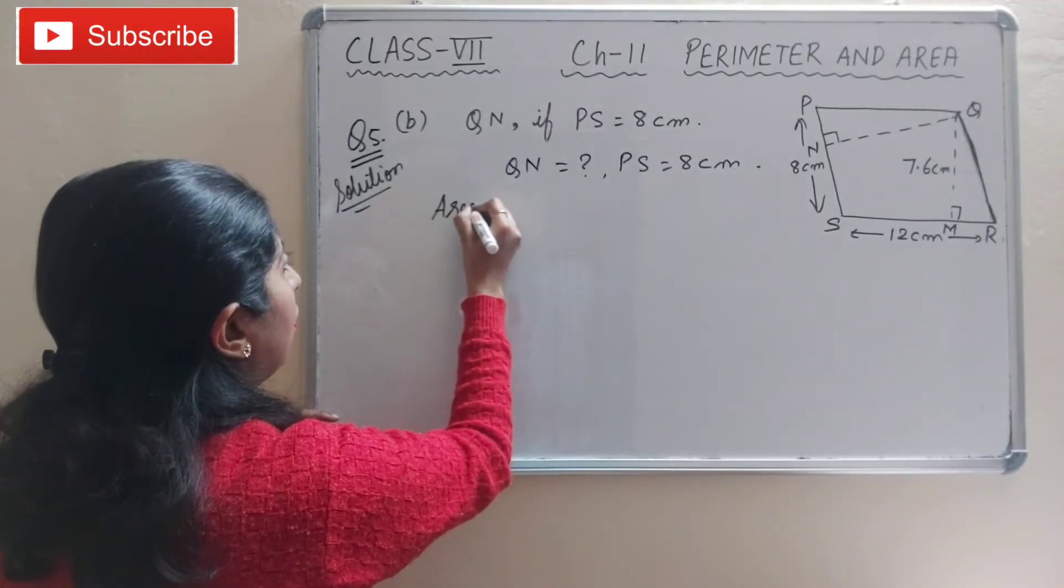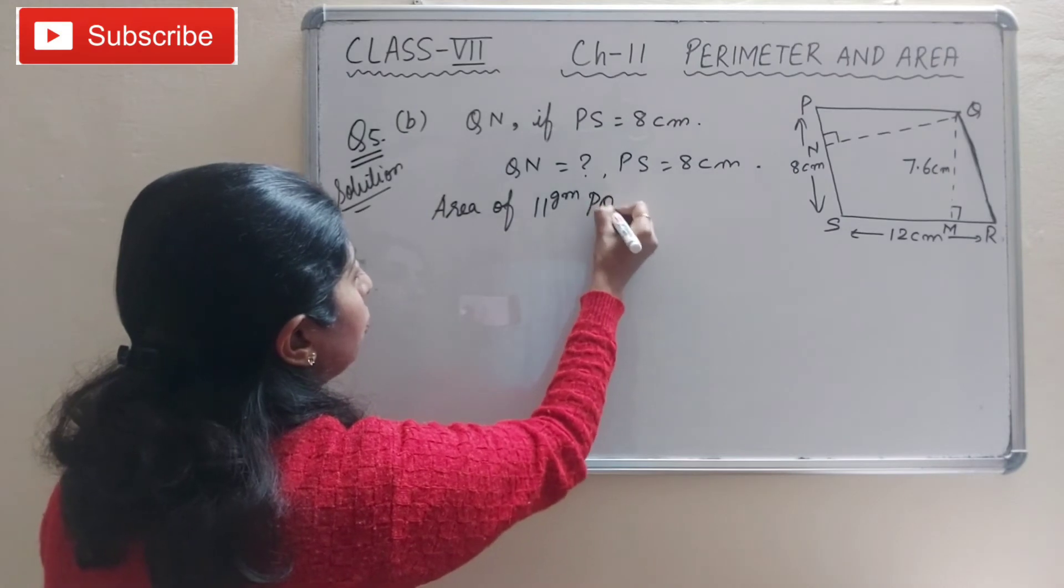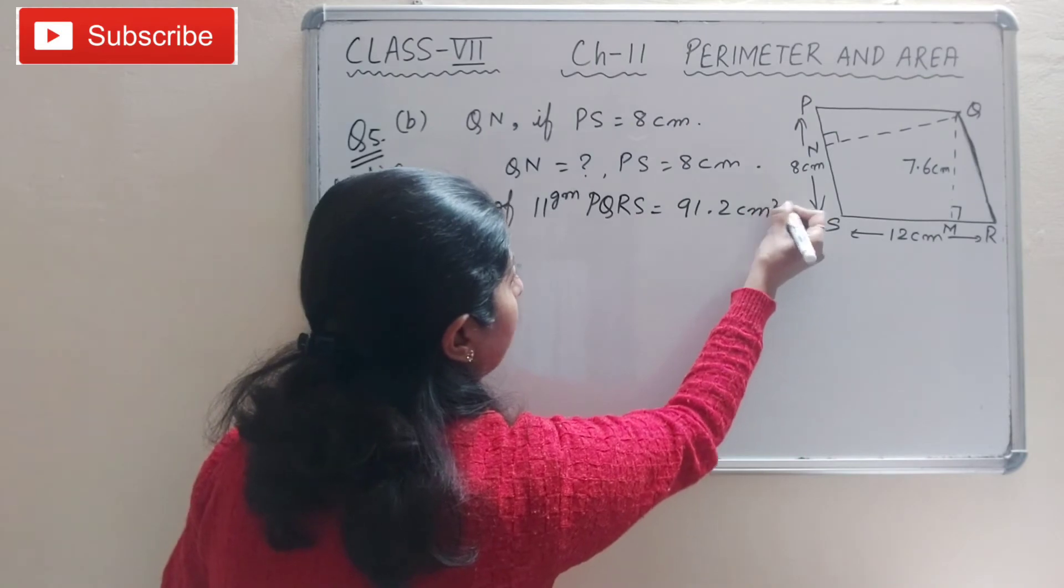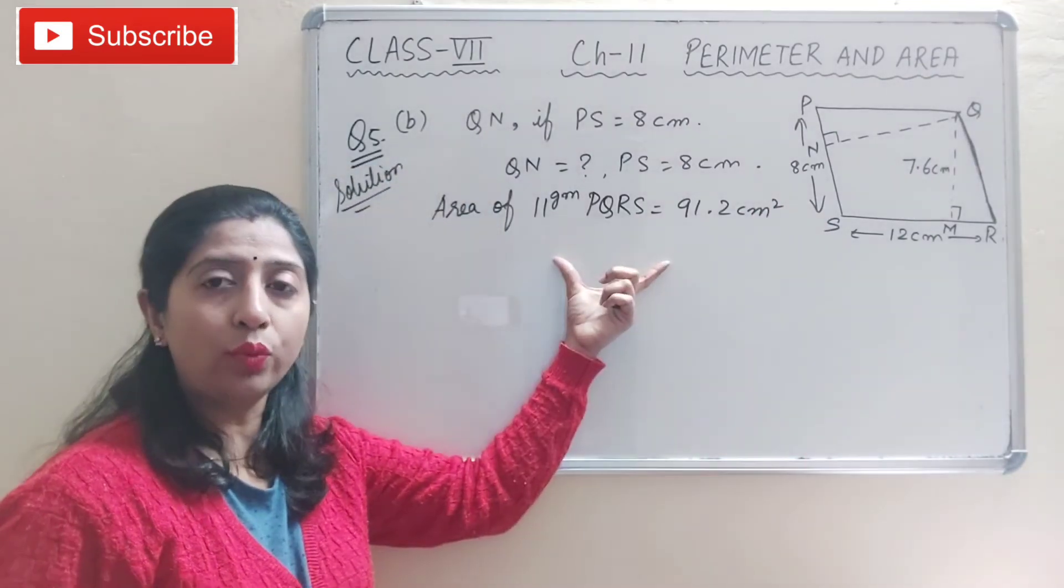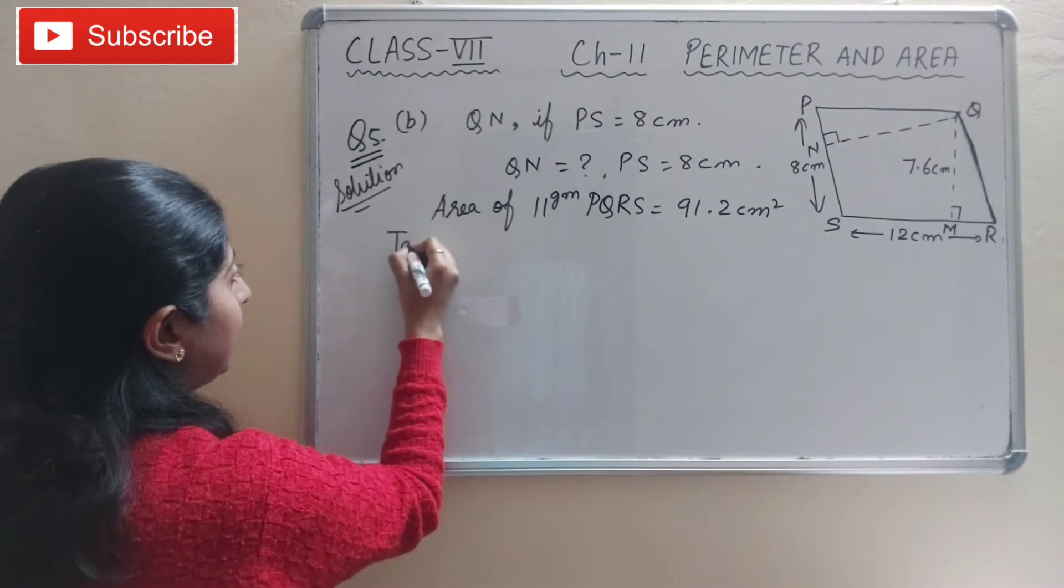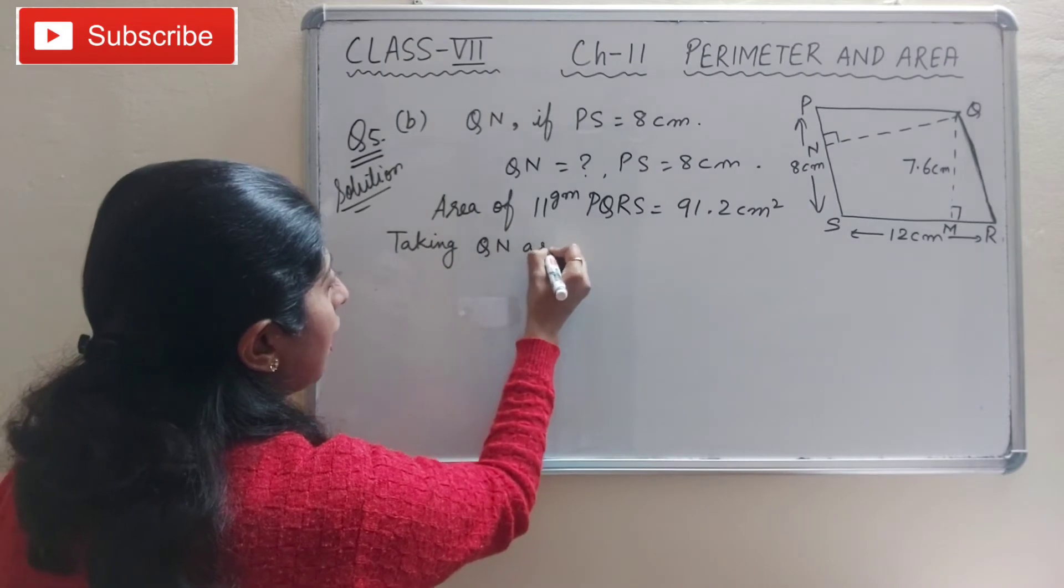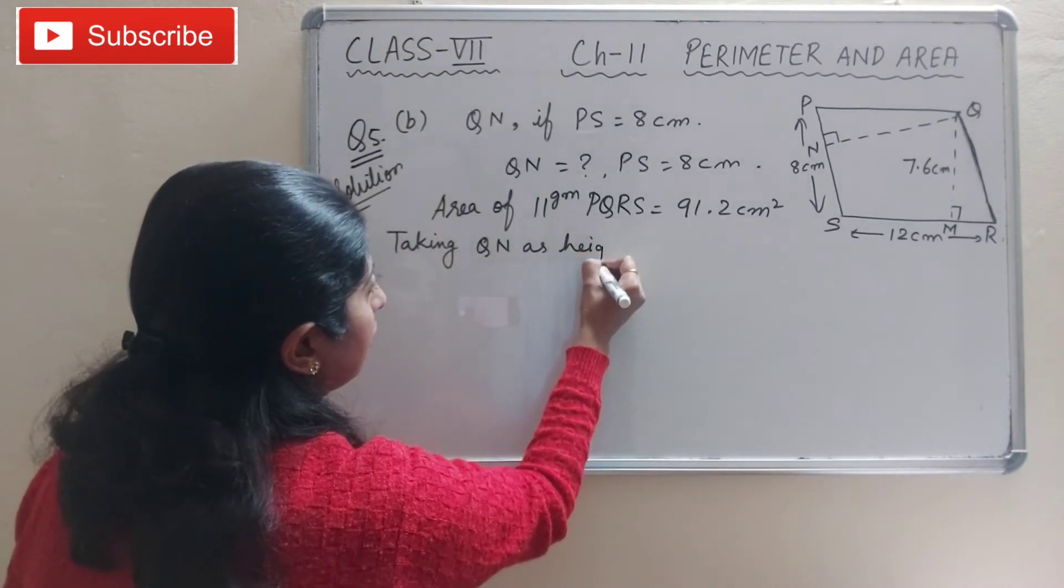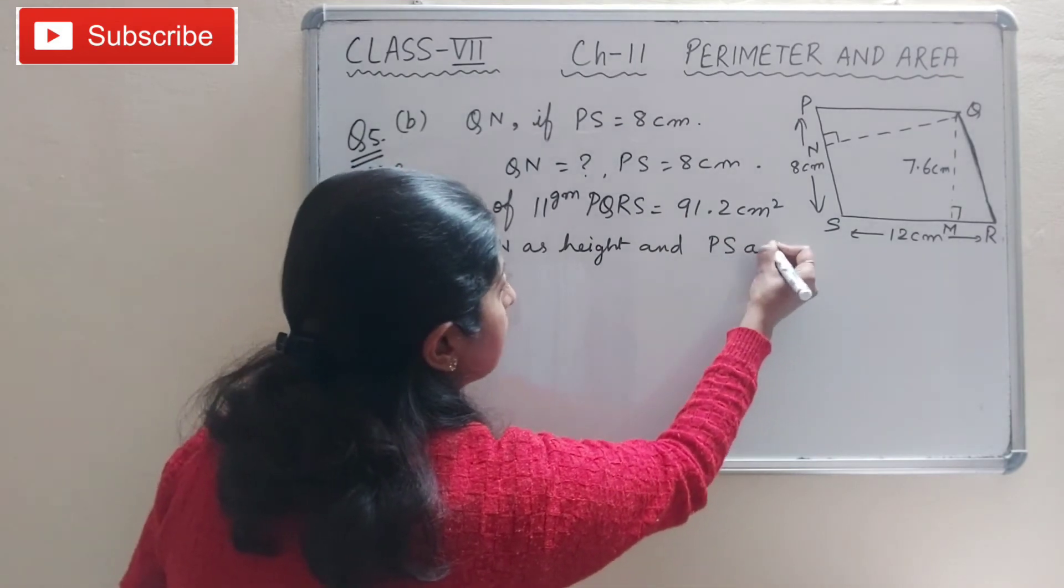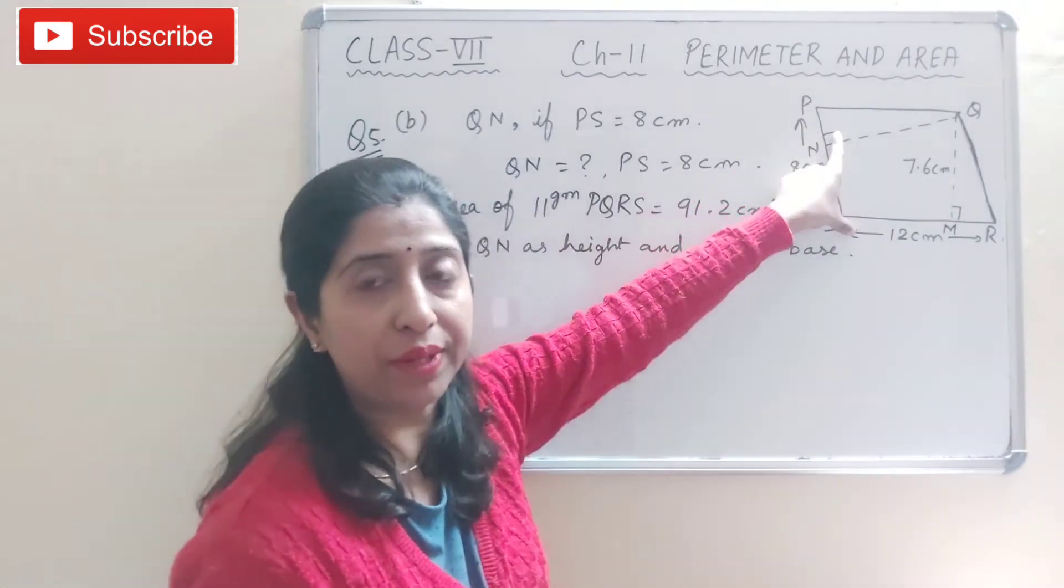Area of parallelogram PQRS is equal to 91.2 cm square. Now, this time we have to write: taking QN as height and PS as base.